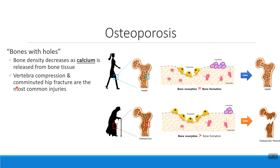We also see a lot of comminuted hip fractures. In a comminuted fracture, the bone just shatters. So in an individual with osteoporosis, we're likely to shatter regions of the femur, especially the region called the neck, which is likely to shatter into multiple pieces because the bone density is so low.